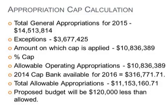The first slide here is the calculation of the appropriations cap. For people that aren't familiar with the process, appropriations are spending — it's authorizing the money to be spent. The total general appropriations for 2015 was $14,513,814. From that there are some deductions which are called exceptions: $3,677,425. That's primarily debt service, the contribution to the library, and some other appropriations that are outside the cap limit. So the amount on which the cap is applied is then reduced to $10,836,389.